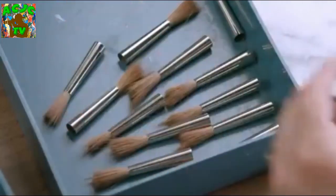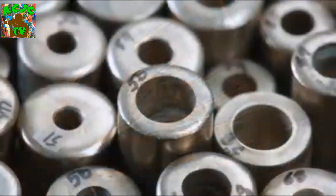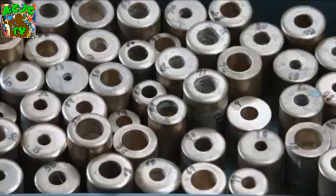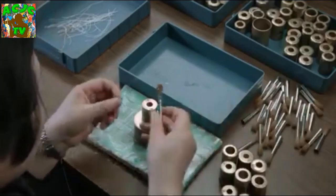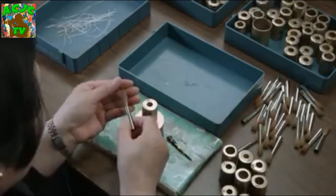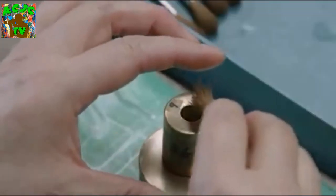Brushes of different shapes require different tensions. The headmaker takes the correct brass mold for the brush shape she's making and inserts the hairs all the way down into the mold cavity.